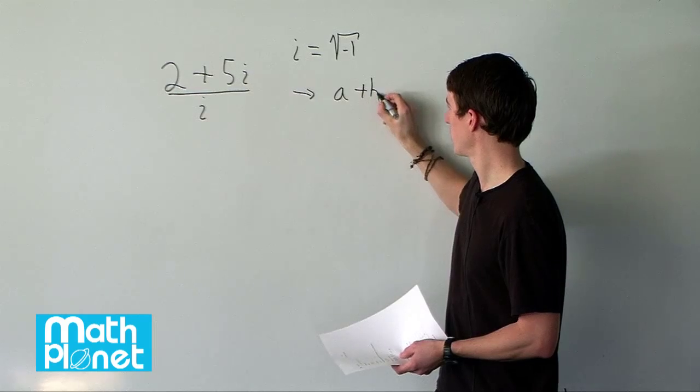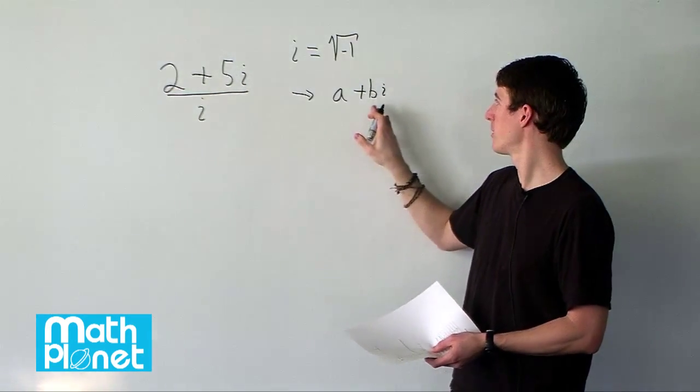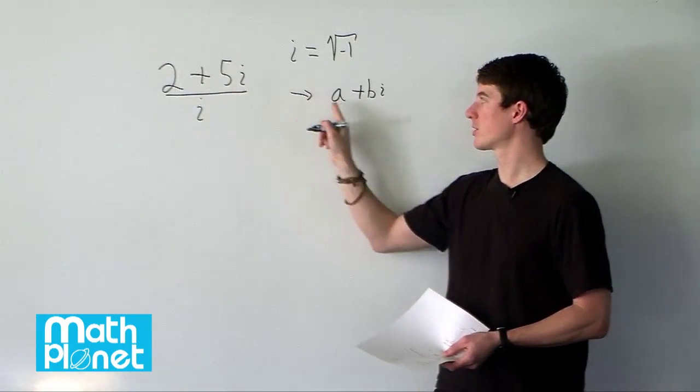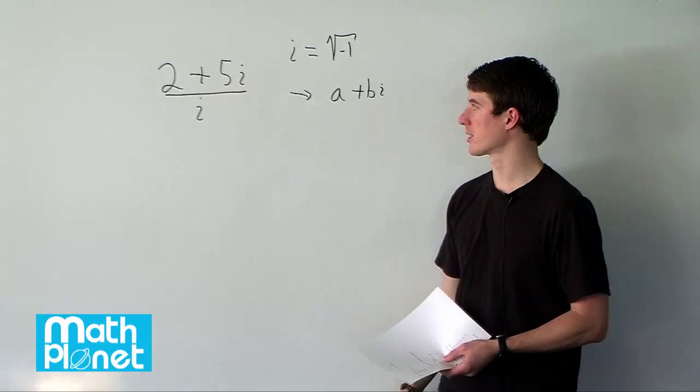where we've split up the a is all by itself, b is just multiplied by the imaginary number. So we want to get this to look something like this. So basically what is a and b in this case?